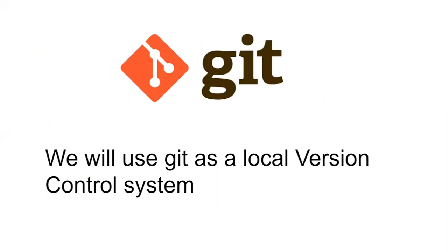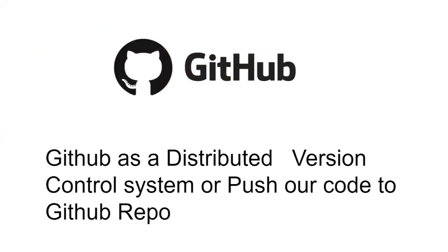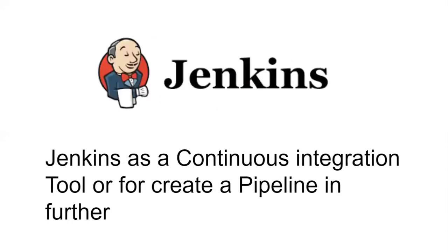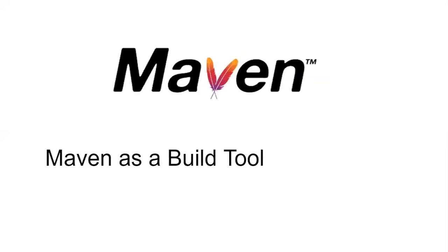We will use Git as a local version control system — it will create a local space in our VM. GitHub is a remote distributed version control system. We will use GitHub to push our code and keep updated code on GitHub, so it will store our code on the repository. Jenkins we will use as a continuous integration tool — it is a tool for continuous integration and will be really helpful to create a complete pipeline.